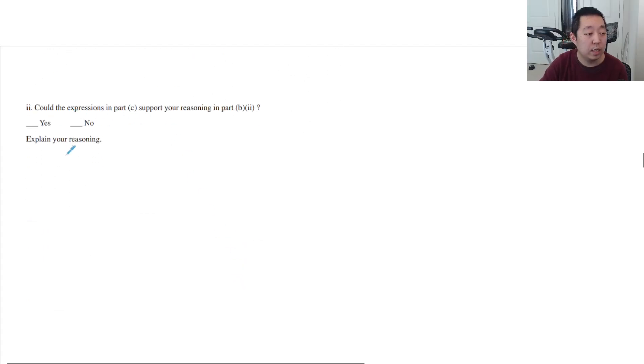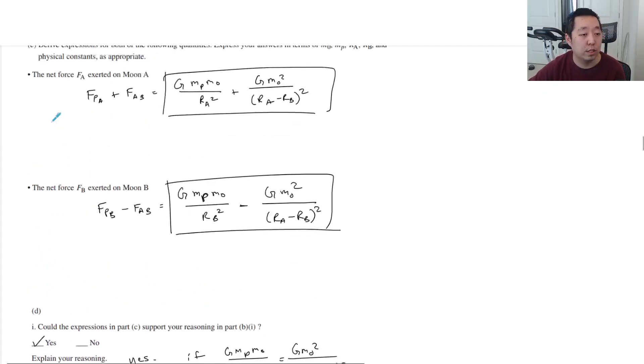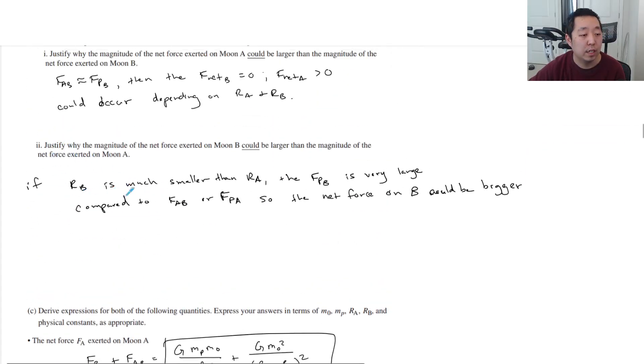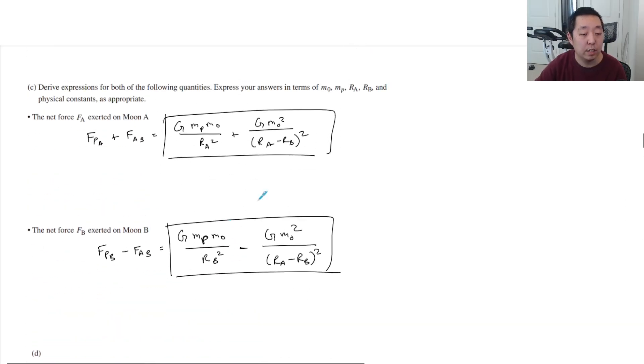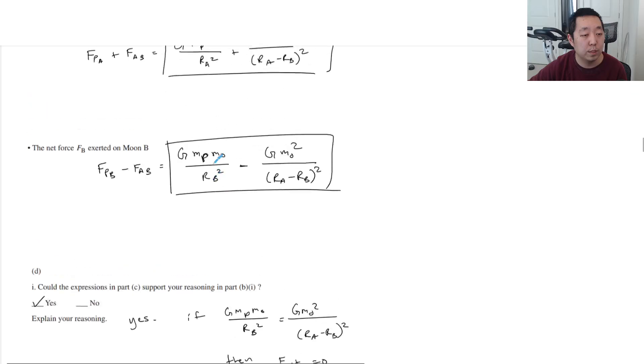How about this, for the second reasoning, how about the second one we said is, if RB is much smaller than RA, then you can look at this equation here, and you could say that this guy is very big compared to... If RB is much smaller than RA, then this guy's about, sorry, what did I say?